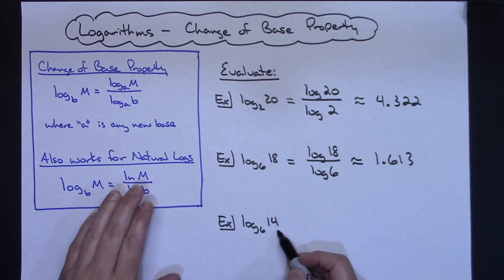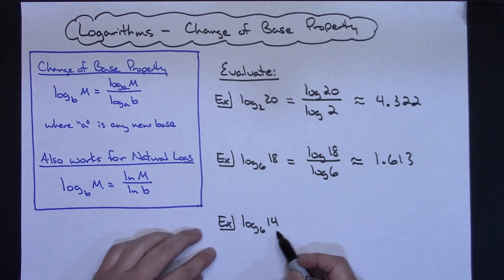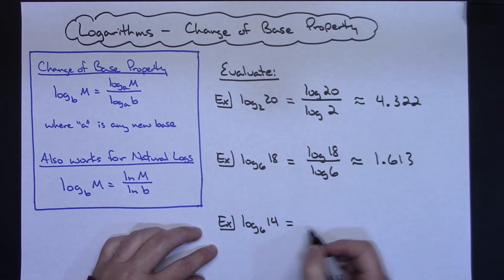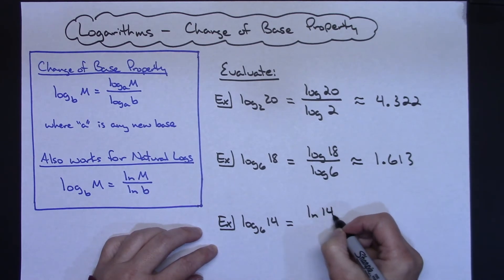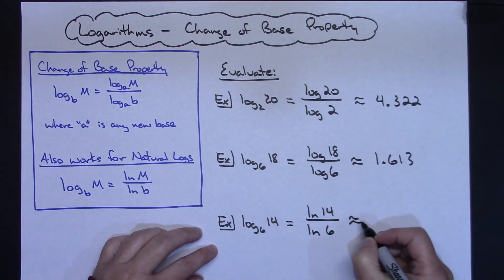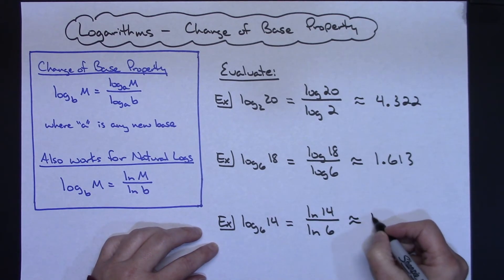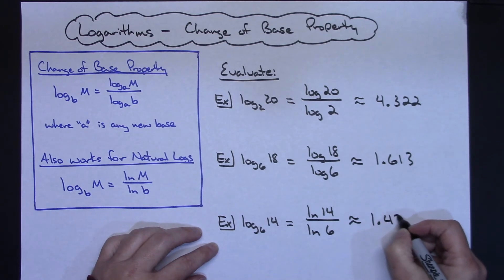Maybe on this last one let's show it with natural logs. You could do the exact same thing if you wanted to use the natural log button on your calculator: natural log of 14 over natural log of 6. Plug that in your calculator and hopefully you're going to get 1.673.